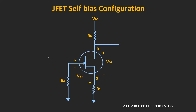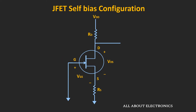For the JFET, the gate current IG is approximately equal to zero, so there will be no flow of current through resistor RG and no voltage drop across it. Therefore, for the DC analysis, we can consider RG as a short circuit, giving us the simplified equivalent circuit. Now for this circuit, let's find the operating current ID and voltage VDS.